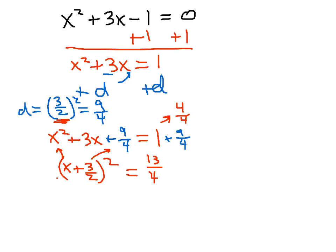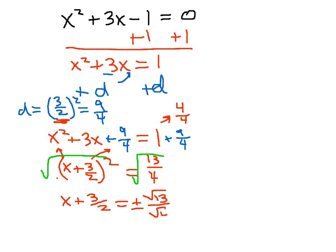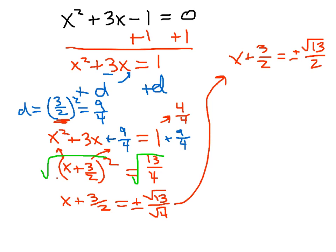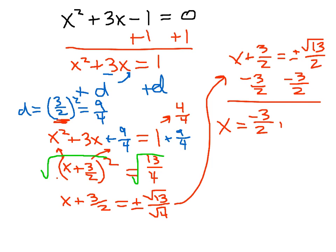Once we do that, now on the left-hand side we have a binomial square that we can take the square root of both sides. We're left with x plus 3 halves. And on the right side, remember, we're going to have plus or minus root 13 over root 4. That's going to simplify nicely — we'll have x plus 3 halves on the left, and plus or minus root 13 over 2 on the right. And now I want to subtract 3 halves from both sides, so I'll get x equal to minus 3 halves plus or minus root 13 over 2.